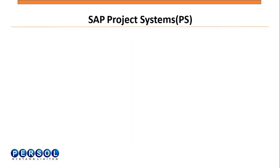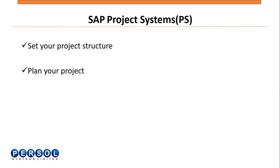SAP Project Systems is one of the key modules in SAP to perform project and portfolio management. It helps you to manage the project lifecycle by breaking it down into structures, planning your project in terms of costs, resources, etc., and also executing and monitoring the performance of your projects.